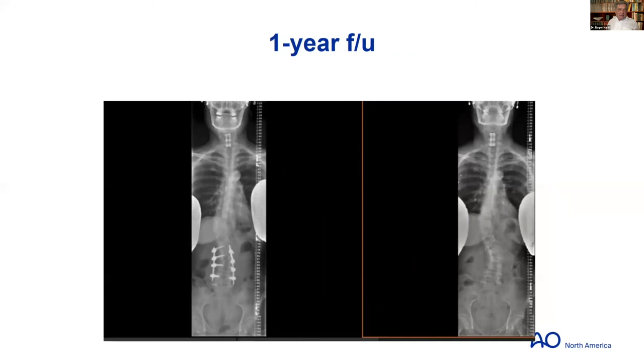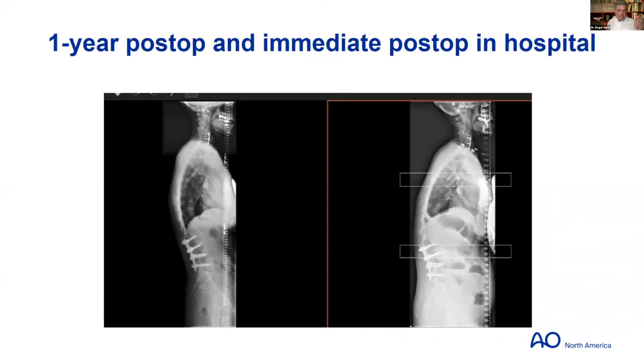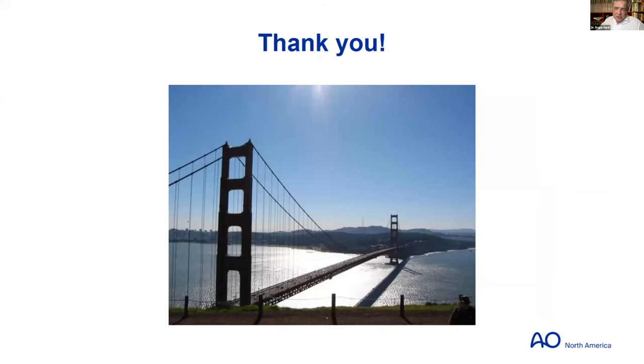Fernando asks about indirect decompression for foraminal stenosis at L5-1 with osteophytes in the foramen — if you put a cage in, you lift everything up but may not truly decompress the nerve. Dean has had a few failures of indirect decompression at L5-1 where patients still have pain. Alex responds: if you elevate slightly and provide stability, osteophyte symptoms may improve over time even without direct removal — drawing on cervical spine evidence. If you know about the osteophyte a priori, you should consider going in to decompress directly. There are further questions in the queue.